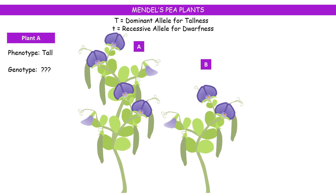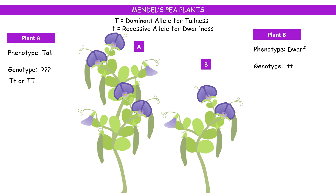The genotype of plant A could be either capital T capital T or capital T small t. But do we know for sure? Well, not yet. For plant B, since it is representing or displaying a recessive character, the genotype has to be small t small t.